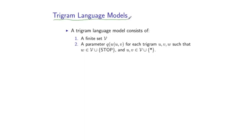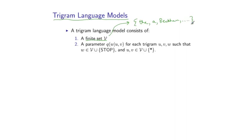A trigram language model will consist of two things. Firstly, we'll have some finite set V, which is just going to be the vocabulary in the language model — in exactly the same way as before. So it might have words like 'the', 'a', 'Beckham', and so on. This might be a fairly large set.